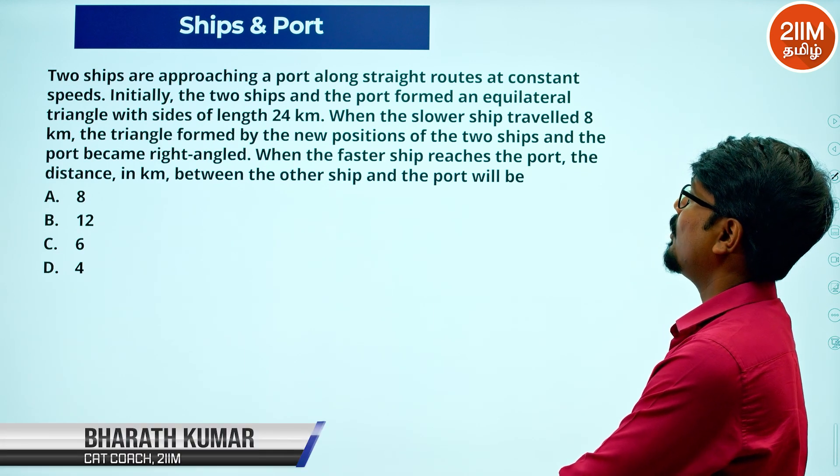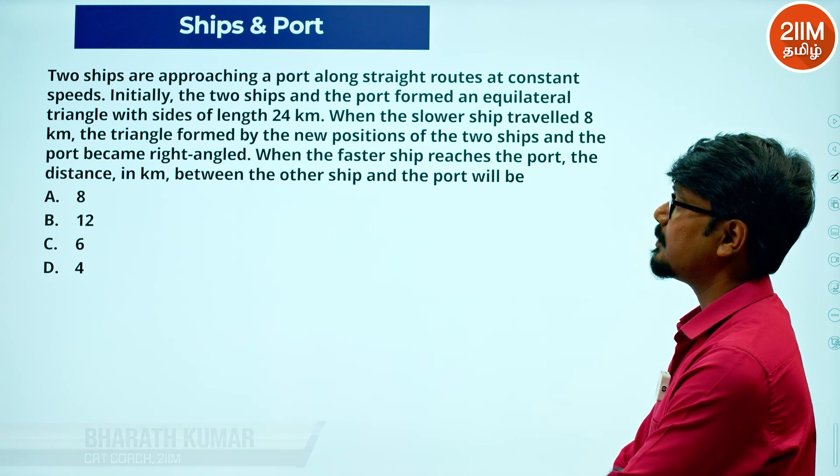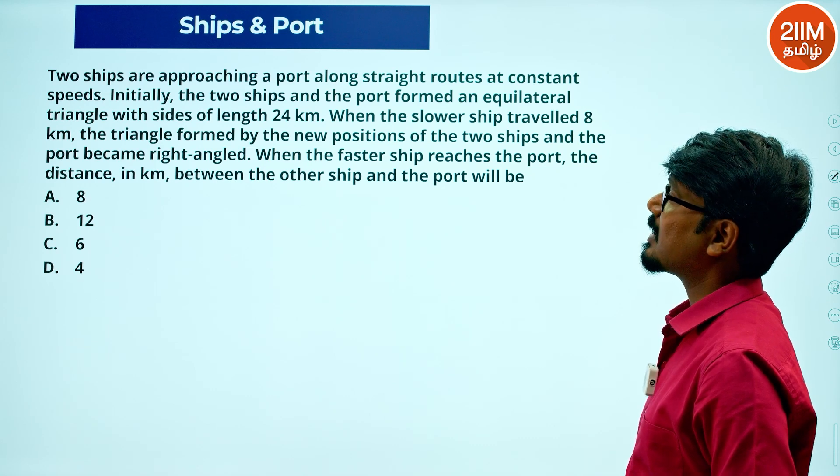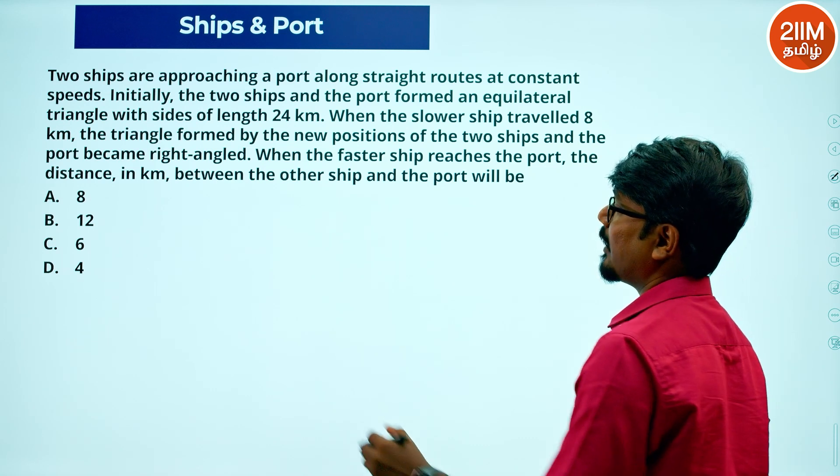Two ships are approaching a port along straight routes at constant speeds. Initially the two ships and the port formed an equilateral triangle with sides of length 24 kilometers.